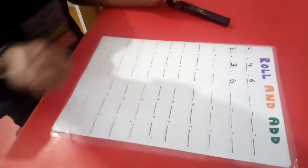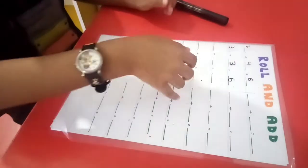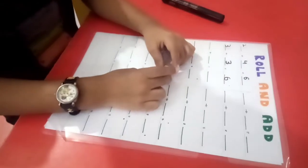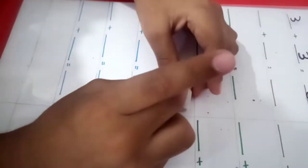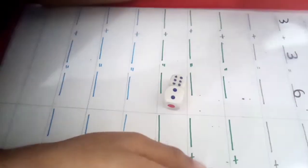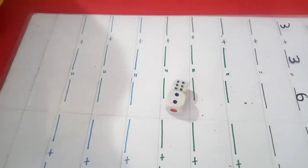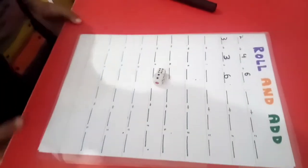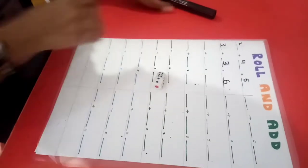Roll the dice again. And what comes? 6 and 2. 6 and 2. So write down and then add.